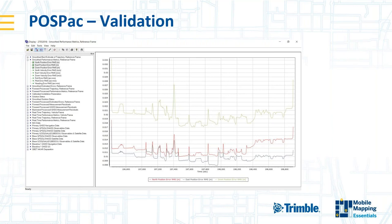POSPac also provides a whole set of tools to validate your data and provide quality control. One chart I like to look at shows the RMS position errors for north, east, and up. The north and east errors are around the centimeter level and the up error is around two centimeters — pretty much what you would expect, similar to results from an RTK system.